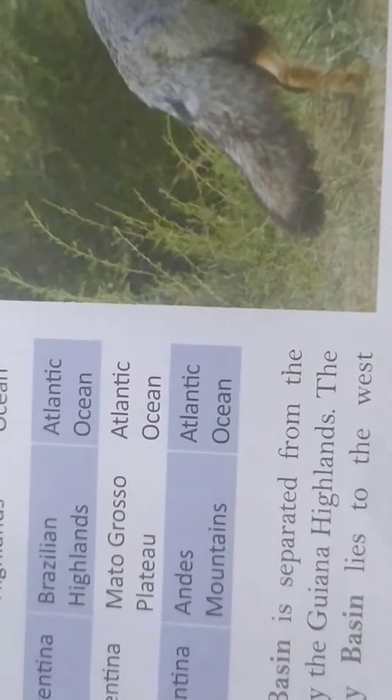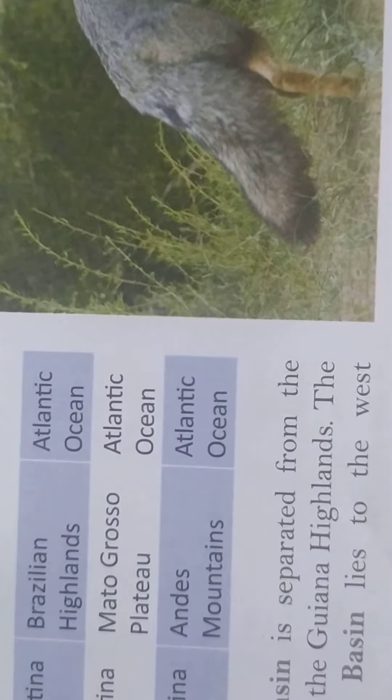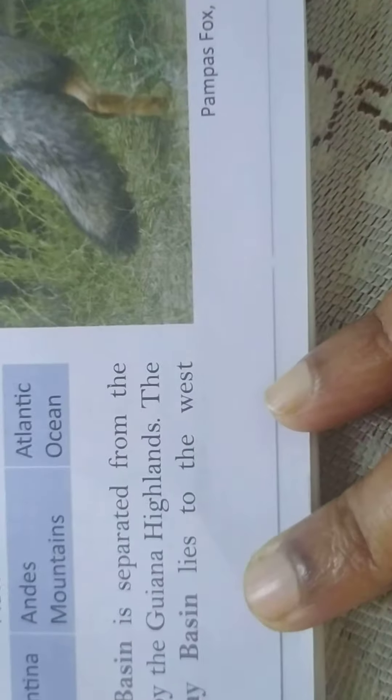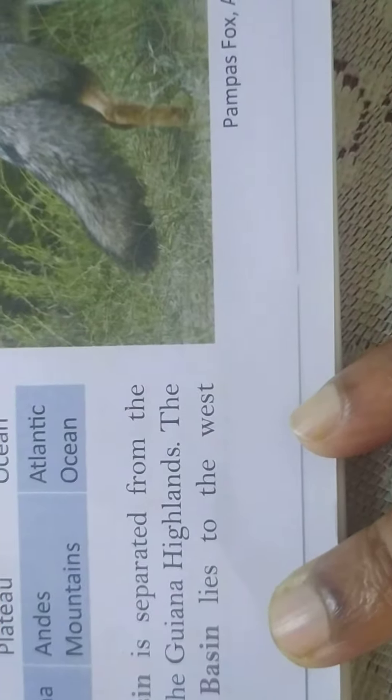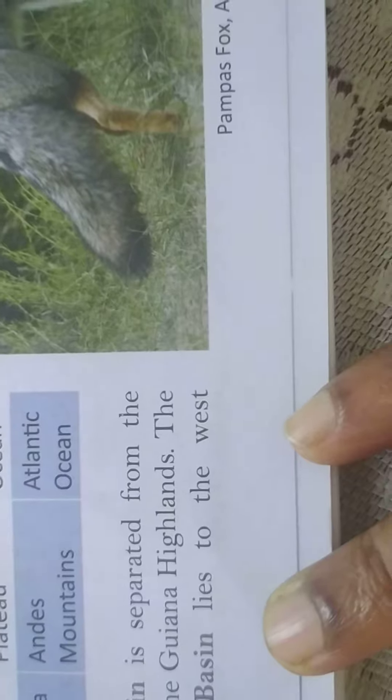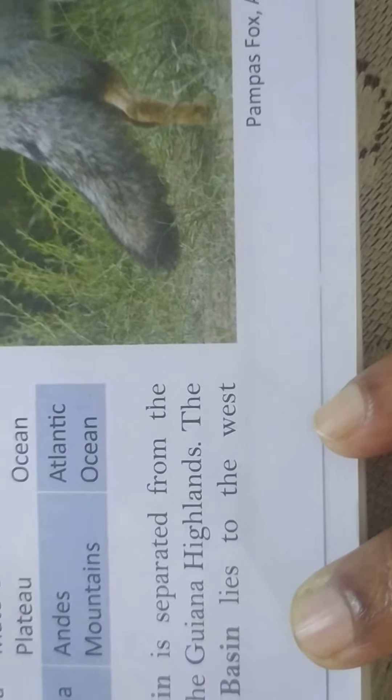Now, Orinoco Basin is separated from the Amazon Basin by the Guana Highlands. Yeh jo Orinoco Basin hai, yeh Amazon Basin se separated kiya hai Guana Island.